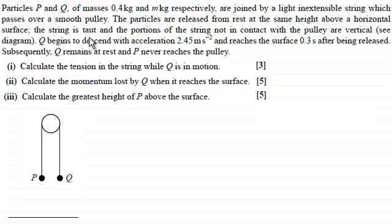The string is taut and the portions of the string not in contact with the pulley are vertical, and Q begins to descend with an acceleration of 2.45 meters per second squared and reaches the surface 0.3 seconds after being released. Subsequently Q remains at rest and P never reaches the pulley.